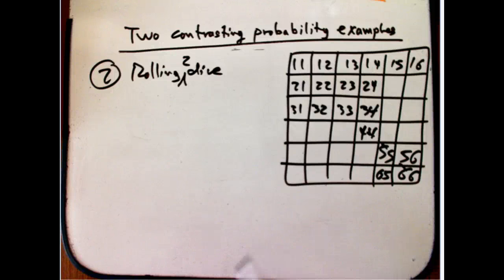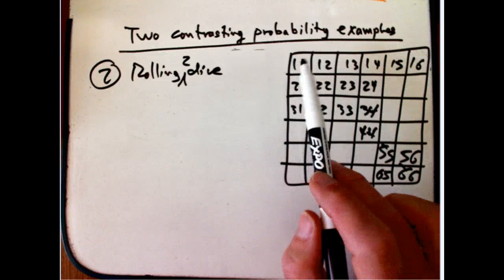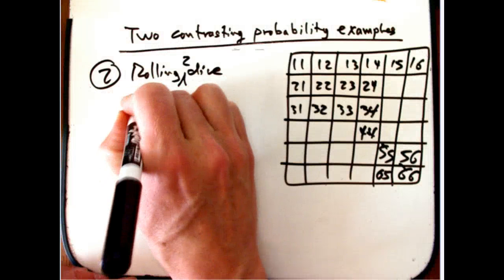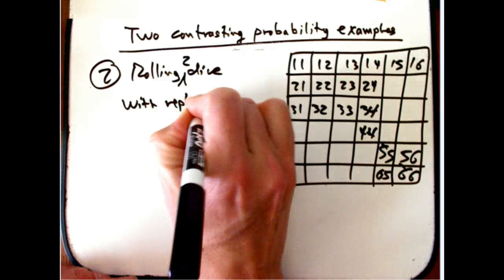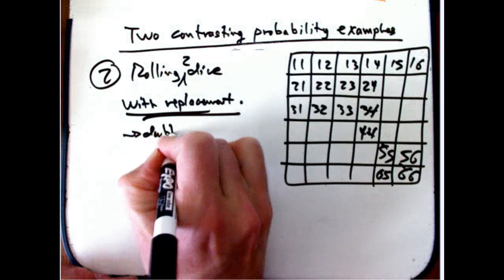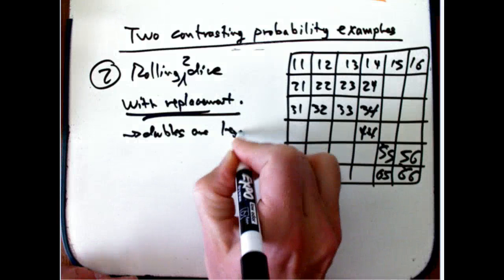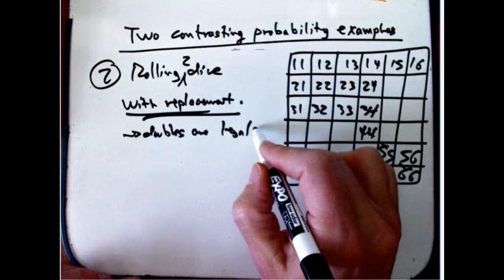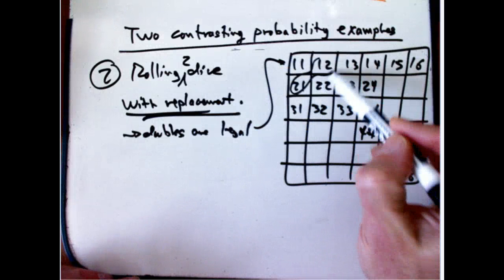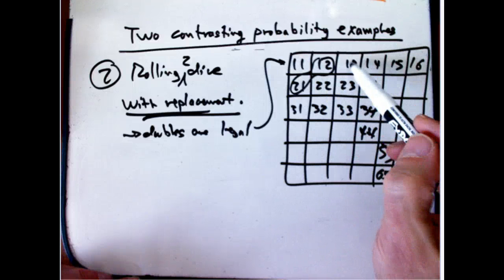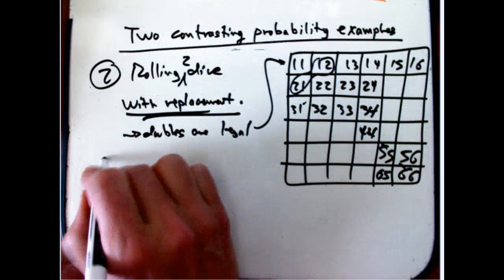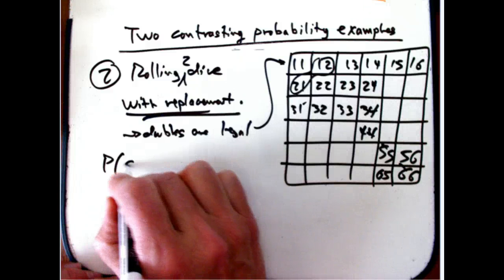And the thing about rolling dice is you allow doubles. So this is really sampling twice from the numbers one through six, just like we did with the cards, but now it's with replacement. And that means the doubles are legal. And that already basically tells us that there's going to be some difference here. If I try to group everything across the diagonal, these guys are going to pair, but doubles don't have a pair. These guys could be paired together, but doubles are special.